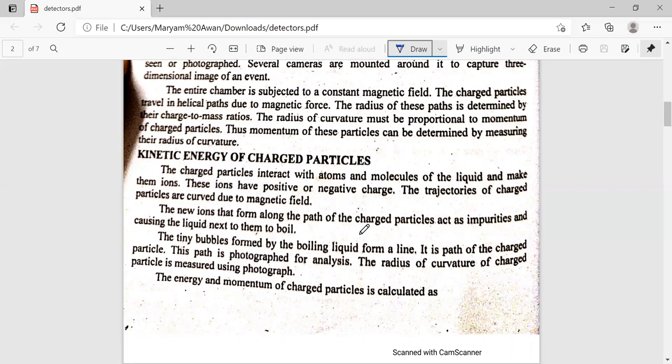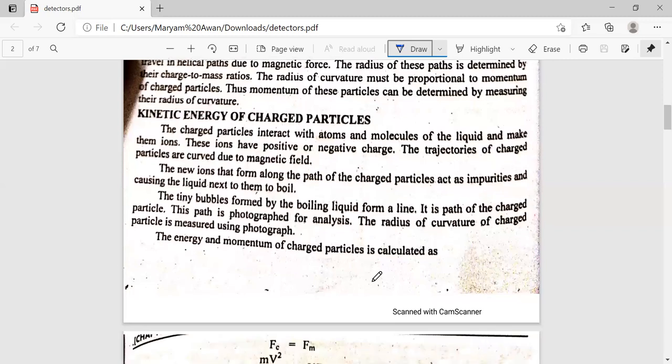The tiny bubbles formed by the boiling liquid create a line. Tiny bubbles formed by the boiling liquid form along the line. This is the path of charged particles. This path is photographed for analysis. The radius of curvature of charged particles is measured using photographs. How do we calculate the energy and momentum?